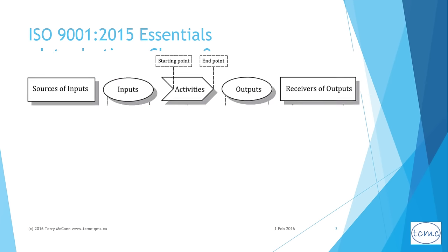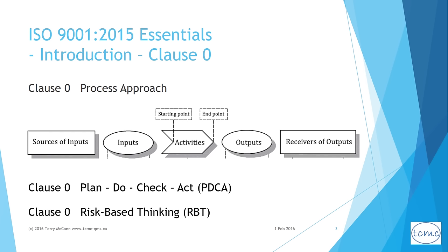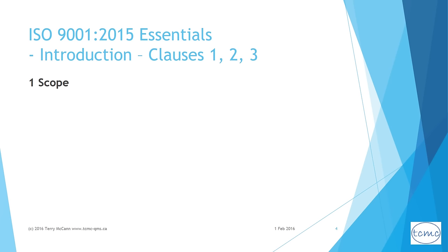Clause 0 is an introduction that briefly describes the process approach adopted by the standard. It takes customer and other requirements or predecessor processes as input and delivers products or services as output, to be input to subsequent processes and ultimately as a product or service for customer satisfaction. There is also an expectation to use the PDCA — plan, do, check, act — methodology within the process approach for implementation of the quality management system, or QMS, and various forms of improvement. Importantly, clause 0 also introduces risk-based thinking as a strategy to be incorporated into the process approach when implementing the organization's QMS.